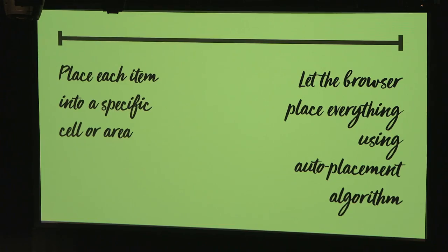You can also place each item into a specific cell or area — say 'I want this to be here.' Or at the other end of the continuum, on the implicit side, you can let the browser place everything using the auto-placement algorithm. This auto-placement algorithm is our new best friend. It has rules where it puts things in a place for you automatically. Sometimes you explicitly place things; sometimes it decides things for itself. Very different from what we've been doing.